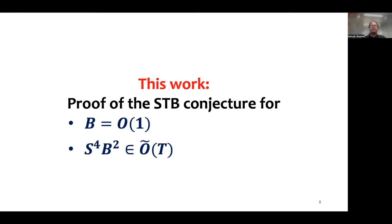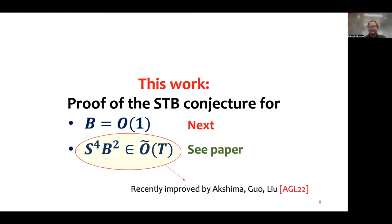In this work, we show that this conjecture is true for all constant values of b and for certain other ranges of parameters. I will cover the proof of the conjecture for all constant values of b in the rest of this talk, and I refer you to our paper for the details of the other results. I should note that this second result was recently improved upon in a follow-up work by Akshima, Guo, and Liu.